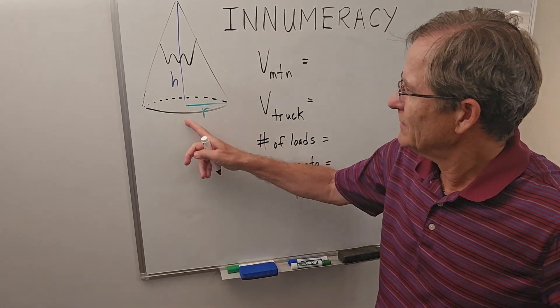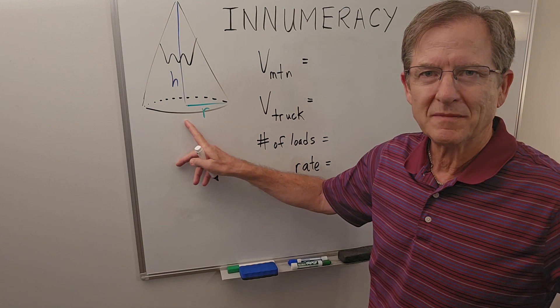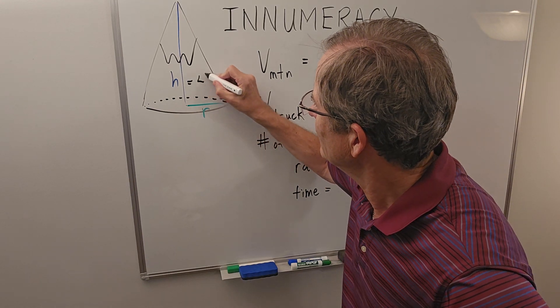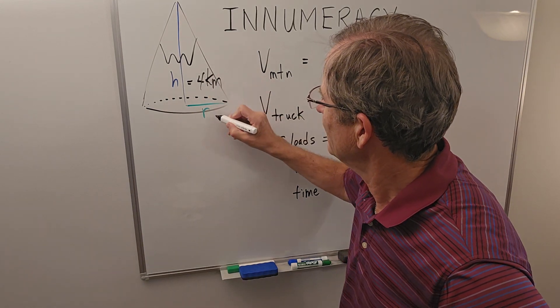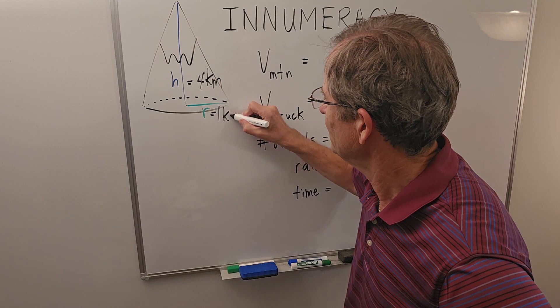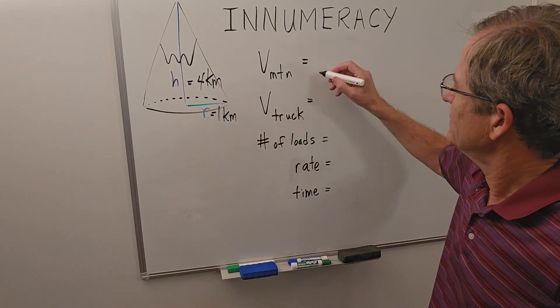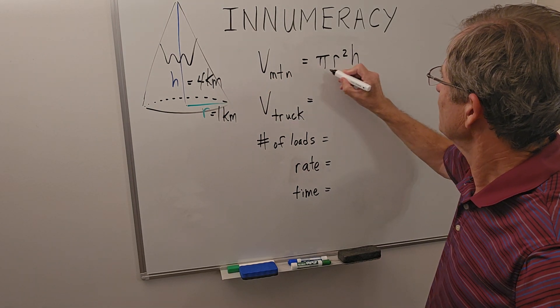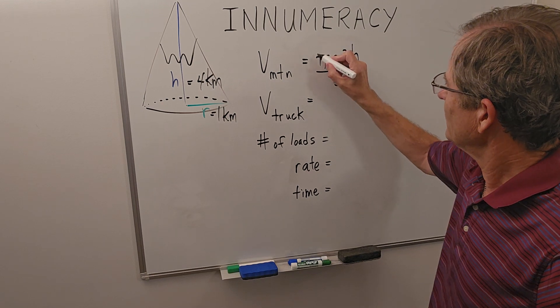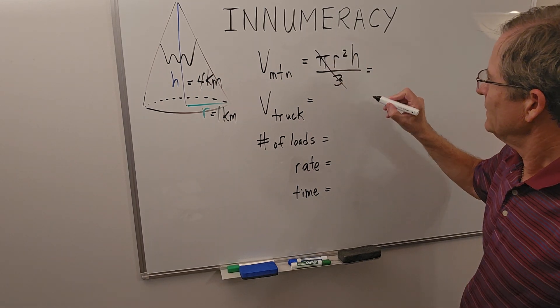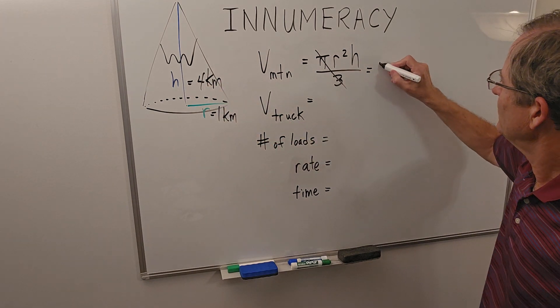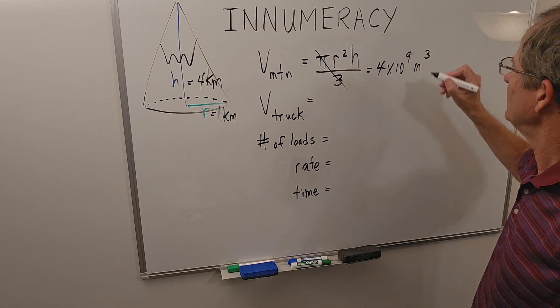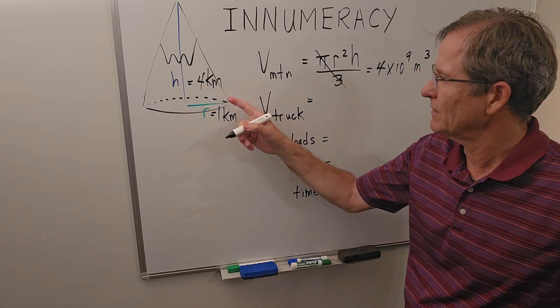So I've estimated the mountain to be a cone. Mount Fuji is about four kilometers high and I'm going to estimate the radius to be about one kilometer. So the volume of the mountain, which is a cone, is πr²h divided by three, where the π and the three more or less cancel, is equal to, if you substitute those numbers, about four billion or 4 times 10⁹ meters cubed, because of course the kilometer is a thousand meters.